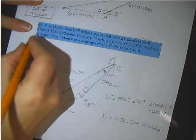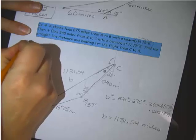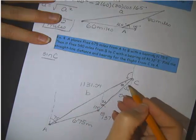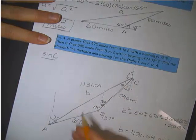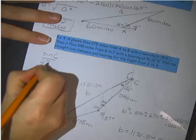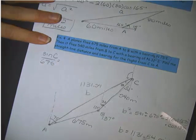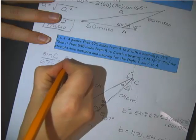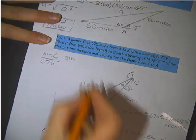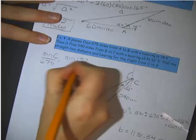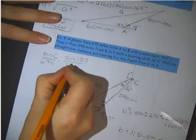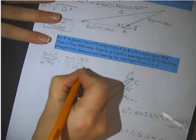So, if I'm looking for angle C, I'm going to put that on top of the law of sines. The sine of the angle C over the opposite side, and the opposite side, little c, equals the sine of the angle that we know, which is B, 137, over its opposite side, which we found was 1131.54.